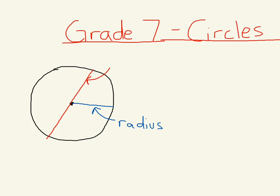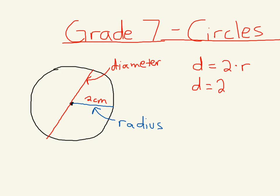The next important term: if we took the radius and extended it as a straight line all the way through the center, that also has a special name — the diameter. There's an important relationship between the diameter and the radius: diameter is equal to two times the radius. So if the radius is two centimeters, the diameter is two times two, which equals four centimeters.